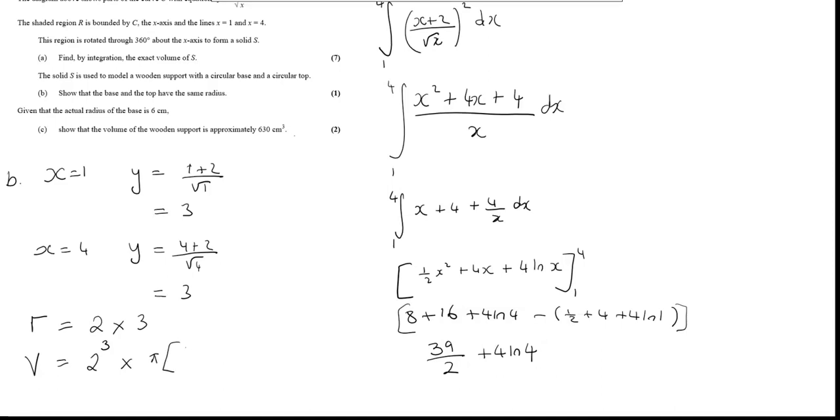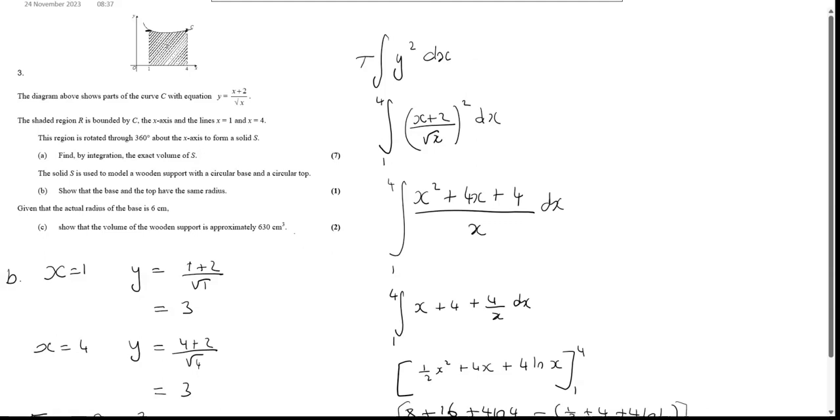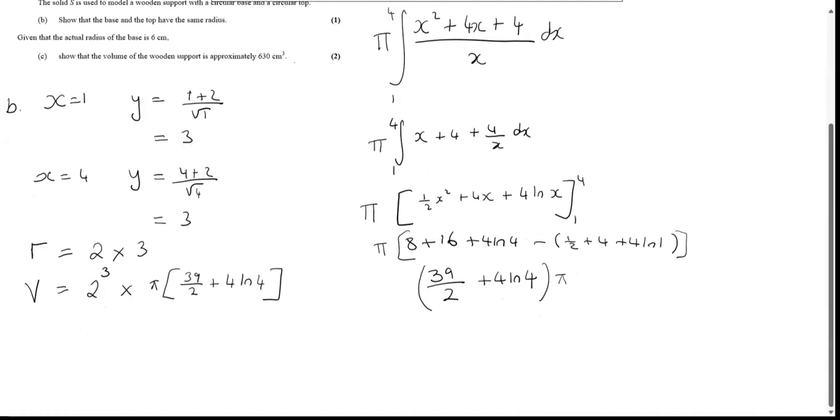And I did forget, seemingly, I did forget to put the pi in when I did my volumes of revolution. So I should put that in, and it should be pi. So if I now whack this into the calculator, so 8 times pi times 39 over 2 plus 4 ln 4, and I should get approximately 630 centimeters cubed.